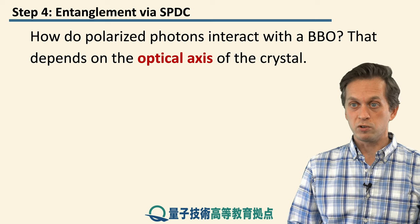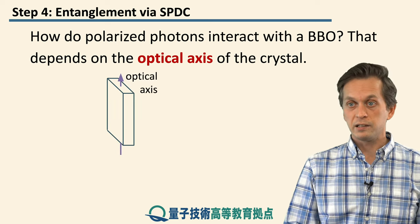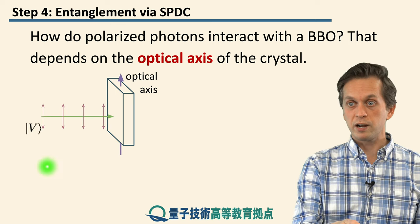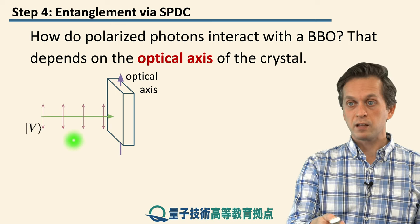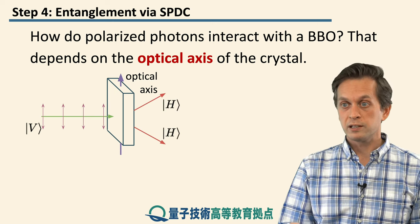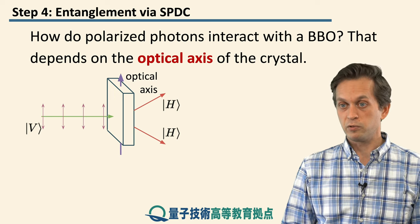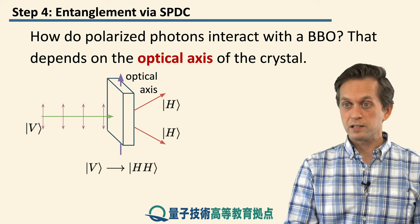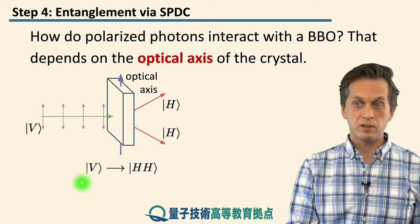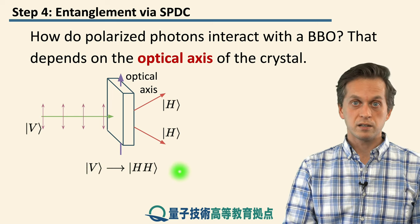On the other hand, we can also rotate the optical axis of the BBO crystal. In this case, if we have vertically polarized light incident on the BBO crystal, then the two photons — the signal and the idler — will both be horizontally polarized. So in this case, we are implementing the following physical transformation: we take |V⟩ and we get two |H⟩ photons.